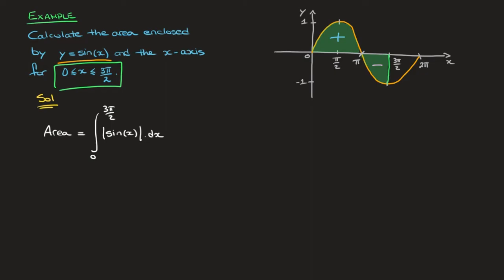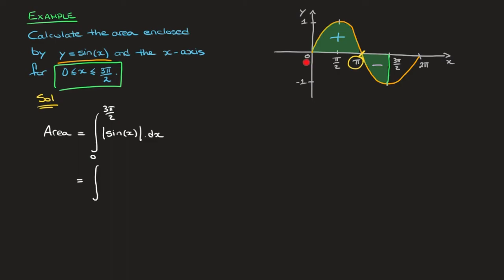First, we note the value of x at which the curve crosses the x-axis — in this case, that's at pi. We then split our integral into two integrals. The first integral goes from 0 to pi: that's the integral from 0 to pi of the absolute value of sine of x. We add to that the second integral from pi to 3 pi over 2 of the absolute value of sine of x.